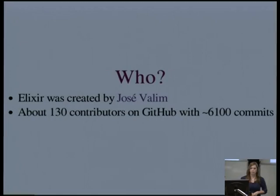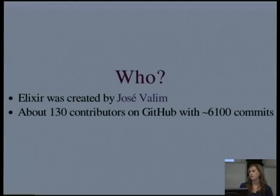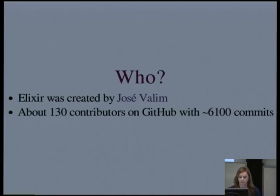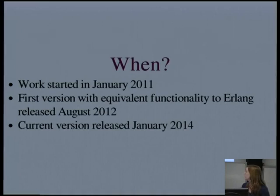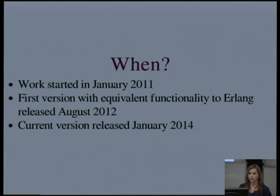Elixir was created by José Valim, well-known in the Ruby community as a core committer on Rails and for his work on the Devise authentication gem. These days, about 130 people have contributed on GitHub with about 6,100 commits, and it's been forked about 270 times. Elixir is still a very young language — work started just three years ago, and the first version with equivalent functionality to Erlang came out in August 2012. The latest version is 0.12.1, released just a few days ago, with a 1.0 release waiting on Erlang 17.